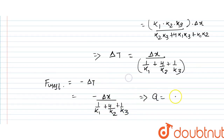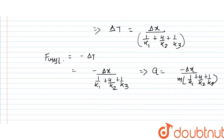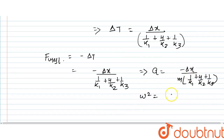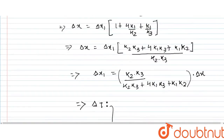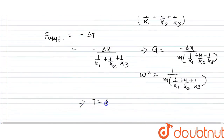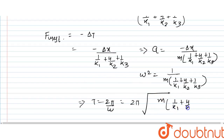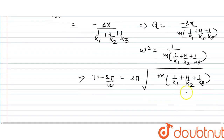तो acceleration = −delta x / [m·(1/K1 + 4/K2 + 1/K3)]। इसे −omega²·x से compare करने पर omega² = 1 / [m·(1/K1 + 4/K2 + 1/K3)] मिलता है। अतः time period T = 2π/omega = 2π·√[m·(1/K1 + 4/K2 + 1/K3)] — यह हमारा final answer है।